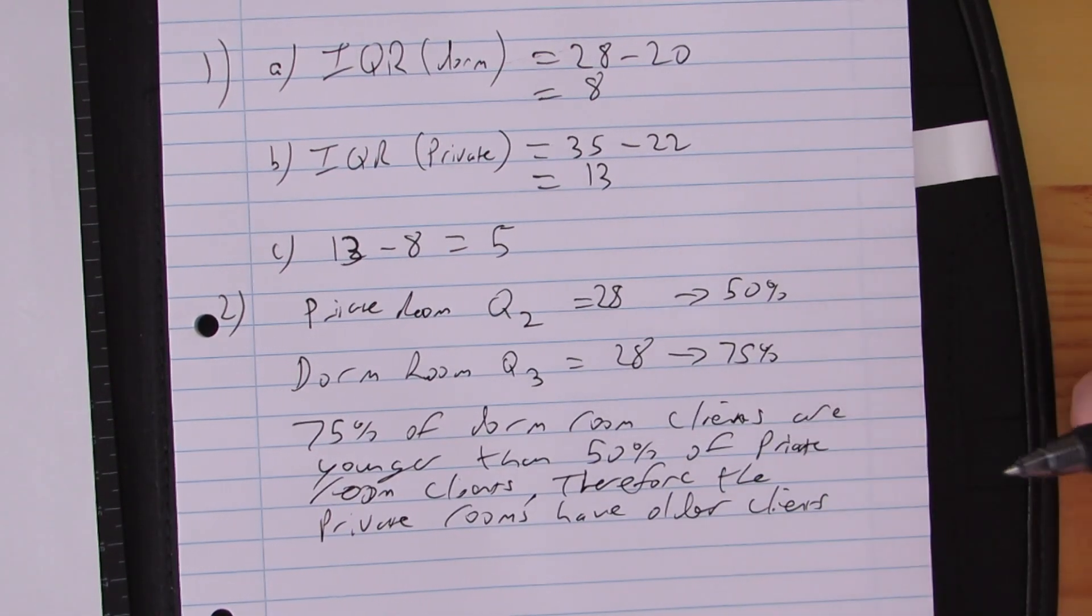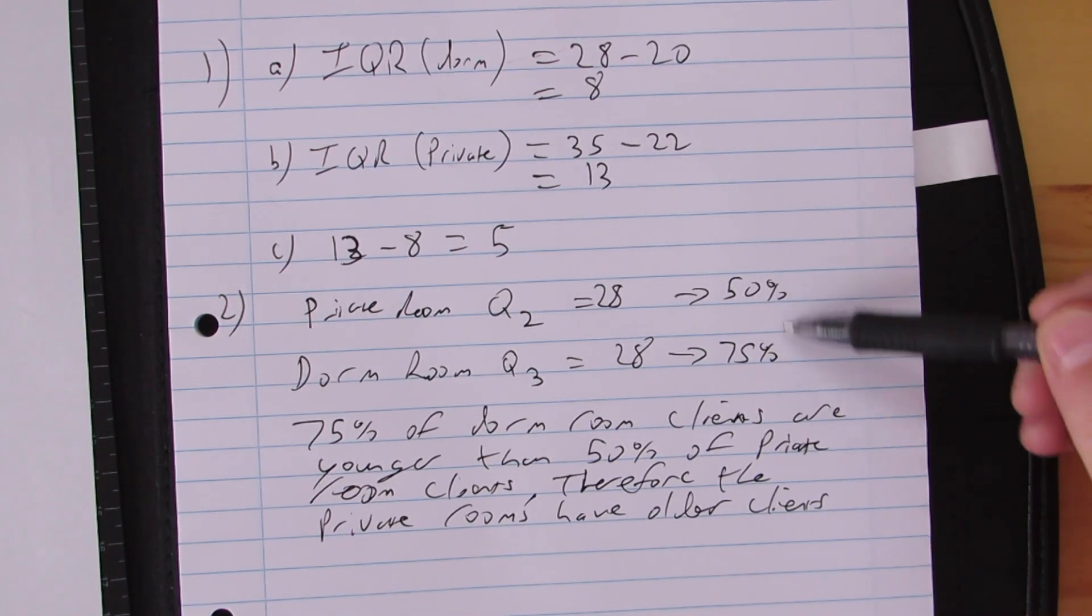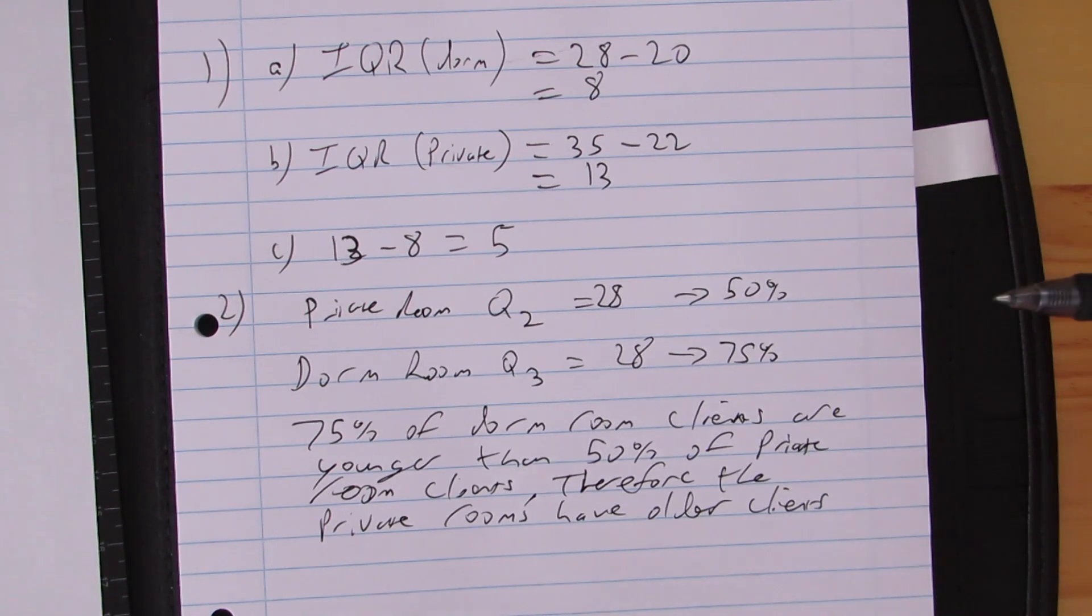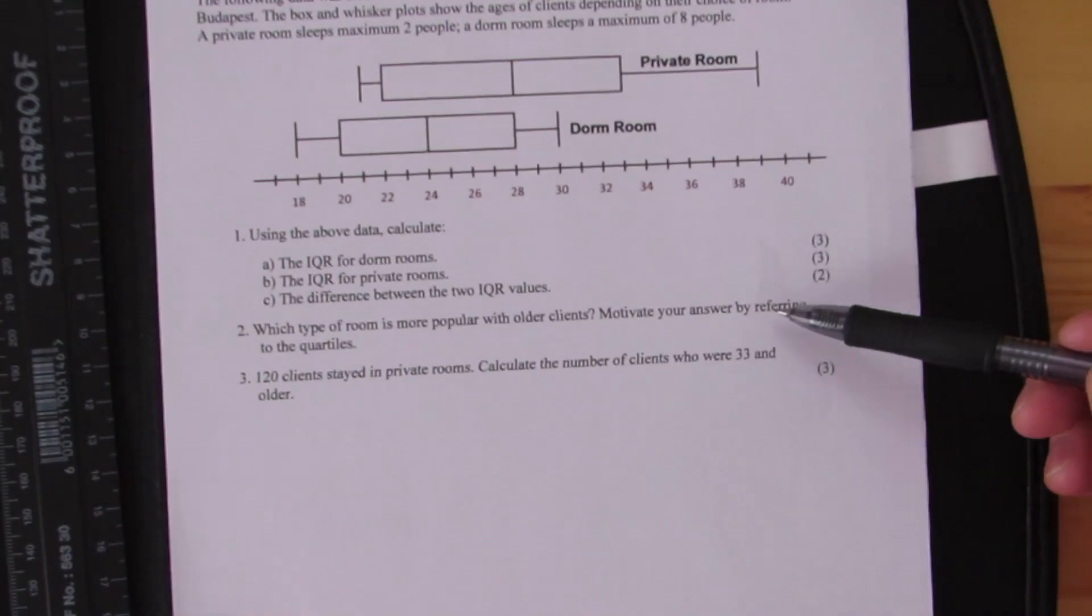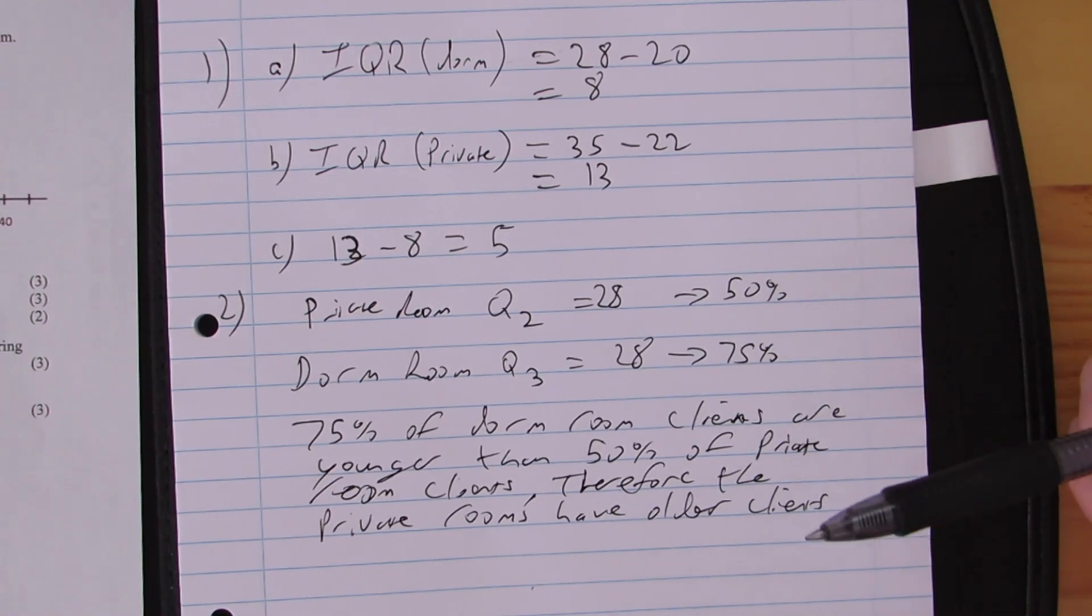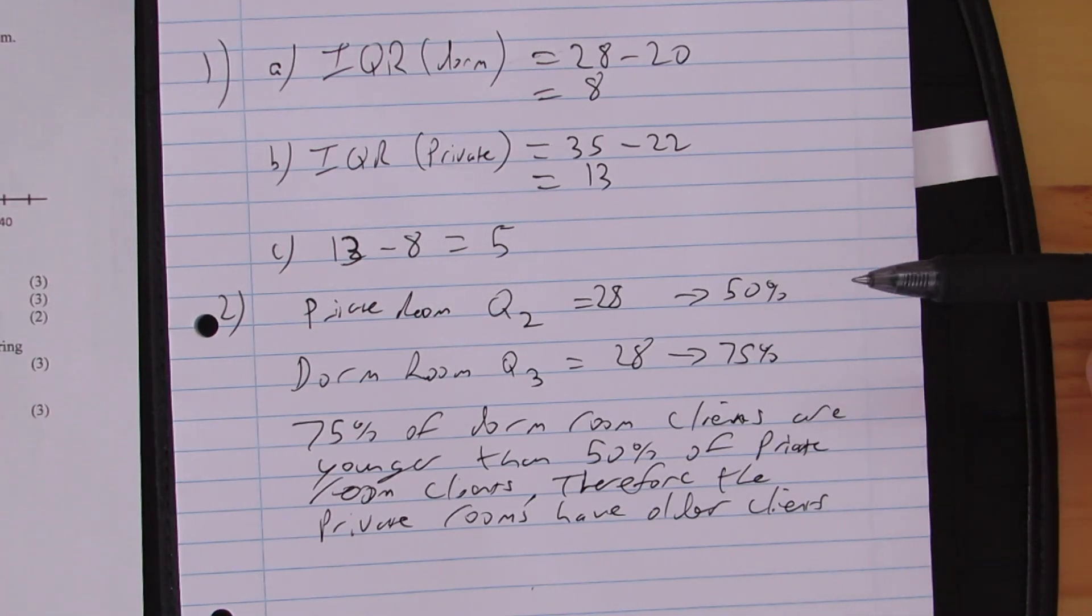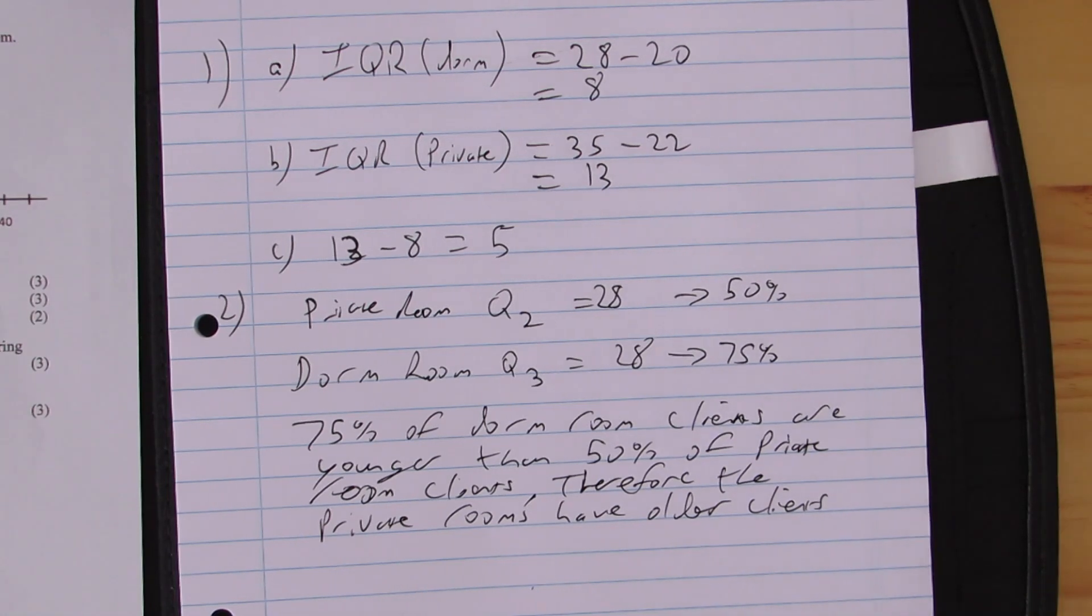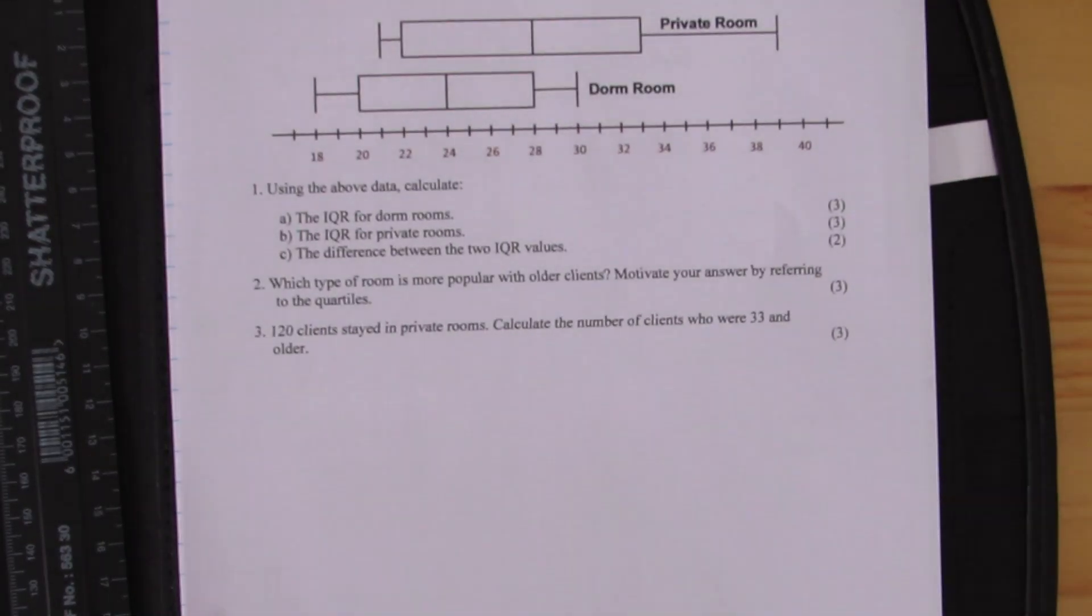The reason why I put these numbers in here - it's a three mark question. The justification is probably only going to be about one mark, and they're going to look for two numbers there because they did ask us to refer to the quartiles. So I've found two quartiles that are exactly the same, and that's probably the easiest thing for us to use there.